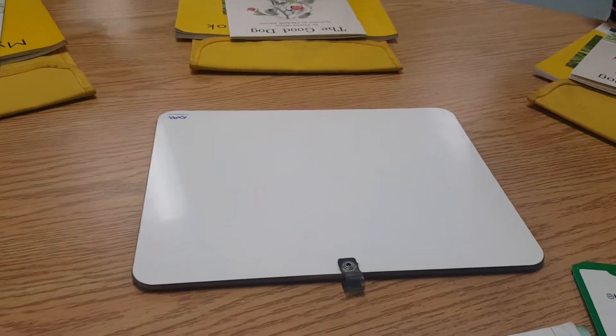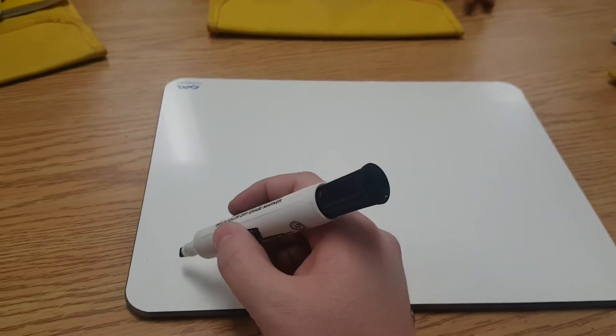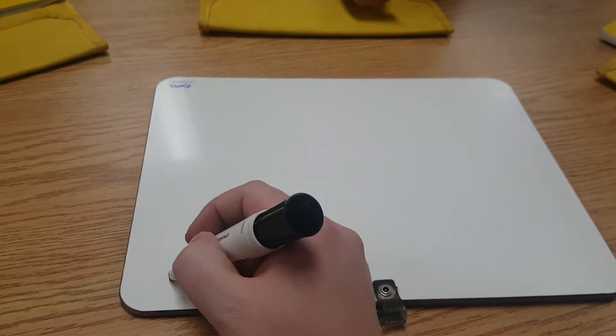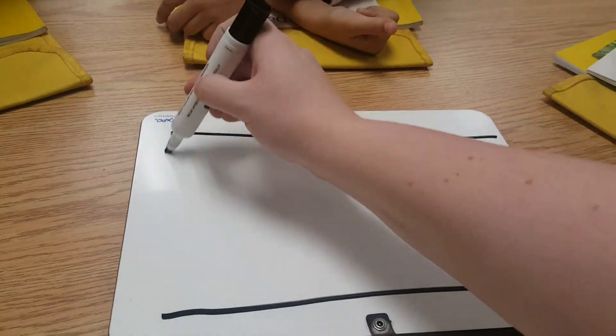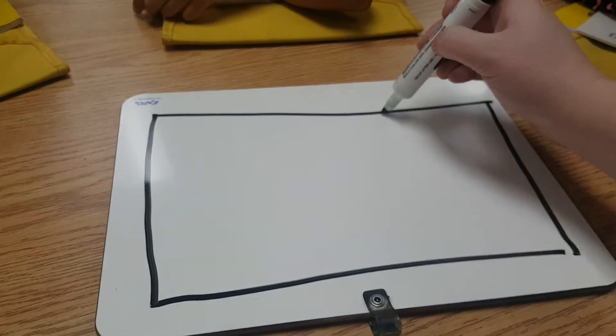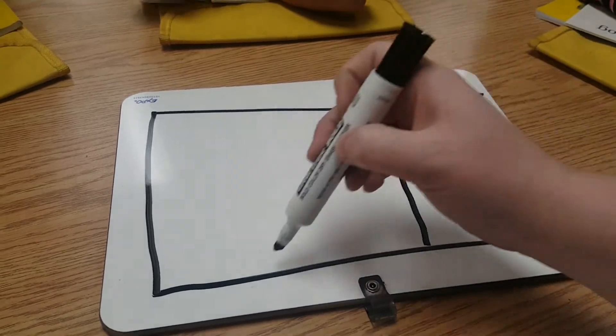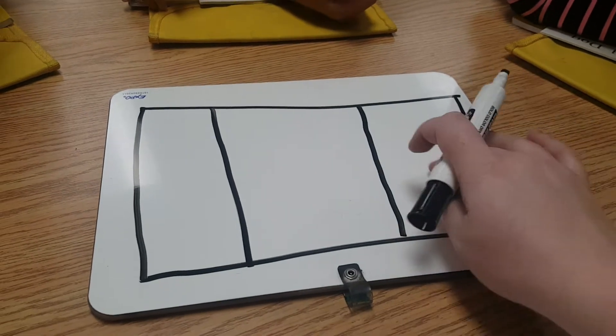So I'm going to make a rectangle. When I make a rectangle, I have to draw two long lines and two short lines. Then, if I want to make three boxes, I draw two lines in the middle. Now I have sound boxes.